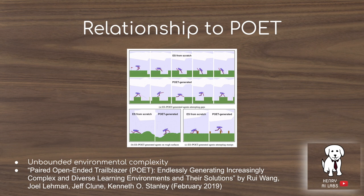This automatic domain randomization algorithm is similar to the POET (Paired Open-Ended Trailblazer) algorithm in the idea of having unbounded environmental complexity. In POET, a bipedal walking agent learns to walk as the environment adapts to create all sorts of obstacles. The analogy is that whereas the bipedal walker learns to balance and walk on different terrains, the Rubik's cube-solving robotic hand learns to solve the cube across all sorts of different configurations — the mass of the cube, the size of the cube, and various visual conditions like lighting and color.